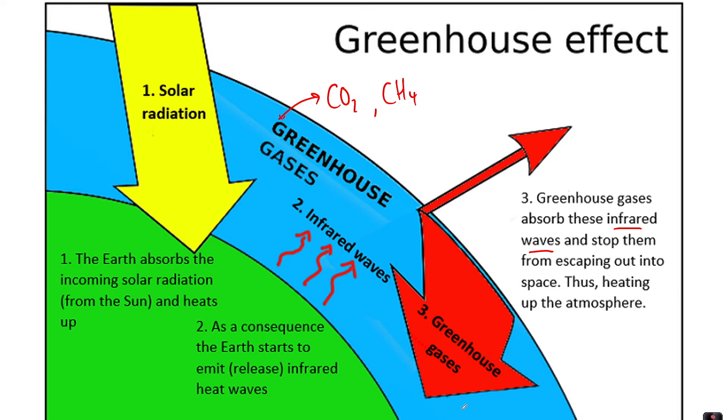They absorb that radiation and re-radiate it back down to Earth, which in one way is a really good thing because it warms up the planet and sustains a big diversity of life. However, as the concentration of greenhouse gases in the atmosphere is increasing, like the carbon dioxide graph we saw, more radiation is being re-radiated back to Earth, causing a warming effect.